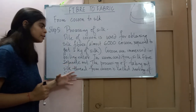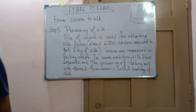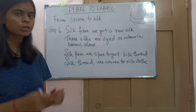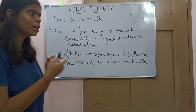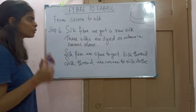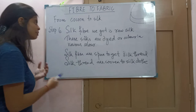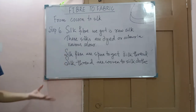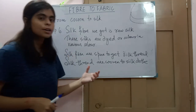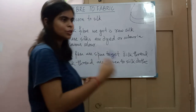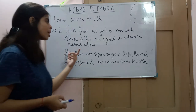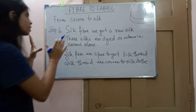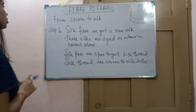After collecting the silk fiber, what we have is raw silk — a very thin thread-like fiber. We then dye this raw silk into various colors, because the silk obtained is a dull white, brown, or gray color. After dyeing, the silk fiber is spun — like a charkha — to get silk thread. This silk thread is then woven into silk cloth, or silk fabric.